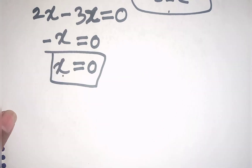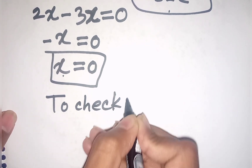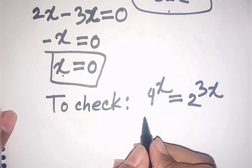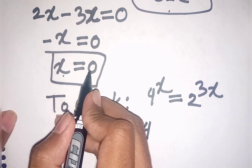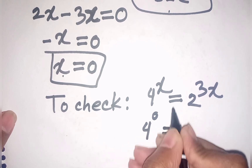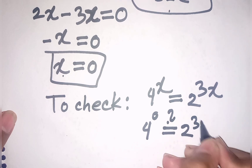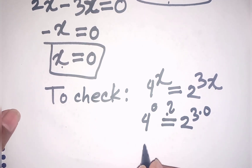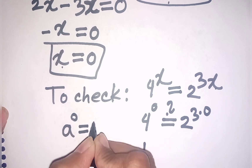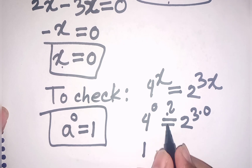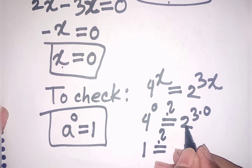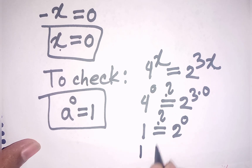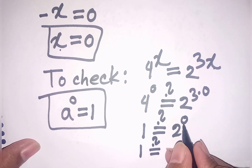Now let's check our answer in the original equation 4 power x equals 2 power 3x. Substituting x equals 0: according to the formula a power 0 equals 1, we get 4 power 0 equals 1 and 2 power 0 equals 1.